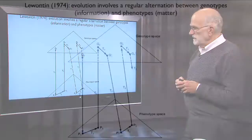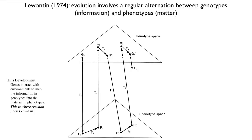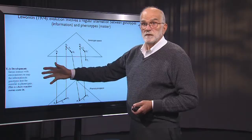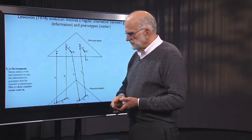Here is an abstract way of trying to visualize what's going on — we owe this to Dick Lewontin from his 1974 book. What he pointed out is that evolution involves a regular alternation between what he called a genotype space and a phenotype space. Those are abstract concepts. You can think of the genotype space as information and the phenotype space as matter. The first transition is the one between a fertilized zygote and an adult organism — that's transformation T1, that's development. There, genes are interacting with environments to map the information in the genotype into the material of the phenotype. So that's where reaction norms come in.